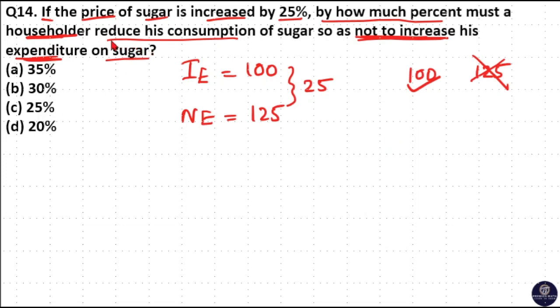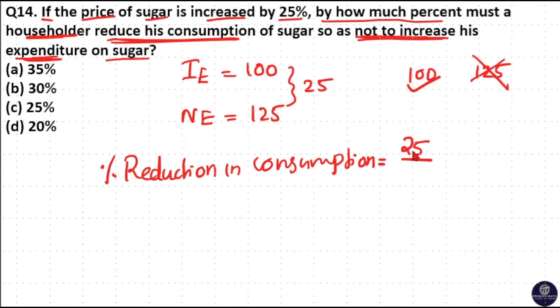So he needs to reduce his consumption in order to keep the expenditure as 100 rupees. The percentage reduction in consumption is calculated as: 25 rupees has to be cut from this 125 rupees in order to keep the initial expenditure.